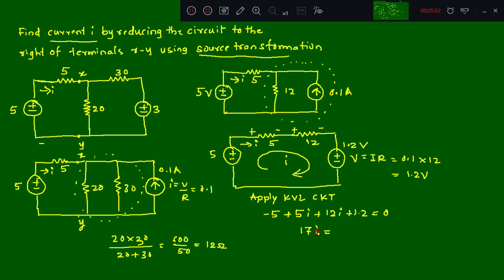So we have 17i = 3.8, therefore i = 3.8 / 17, which gives 0.224 amperes. This is the required answer.